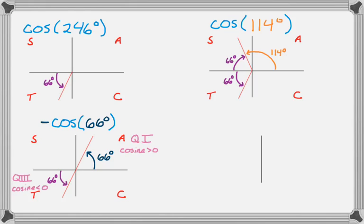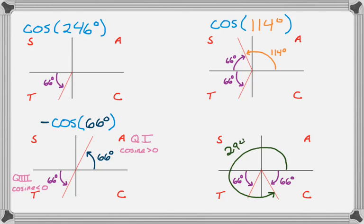There's one more quadrant. In the fourth quadrant, the angle making a 66-degree angle with the x-axis, measured counterclockwise from the positive x-axis, is 294 degrees. Since cosine of 294° is positive and cosine of 246° is negative, I multiply by negative 1 again. So all four of these quantities are equal, and importantly the answer is a negative number — that's why I included a negative 1 factor for the first and fourth quadrant angles.